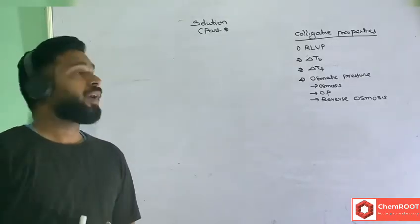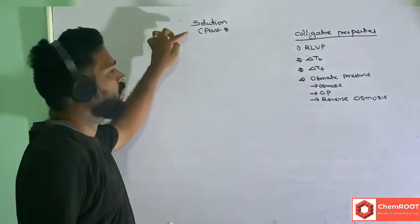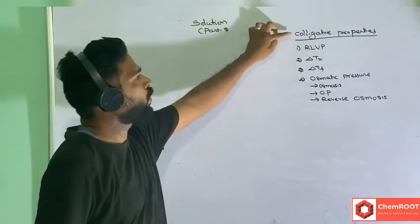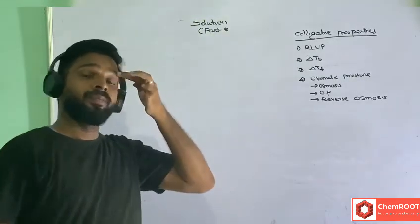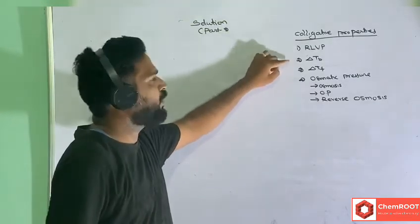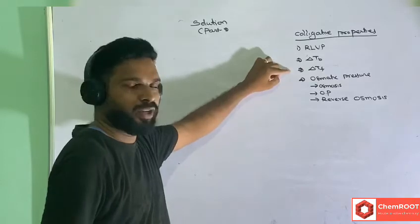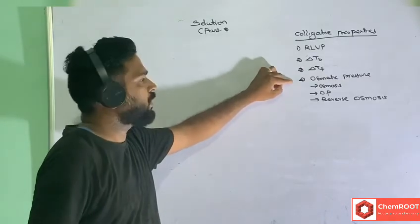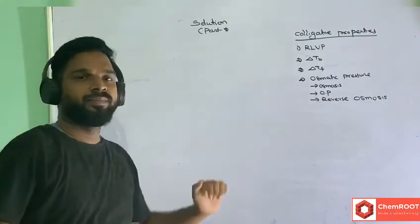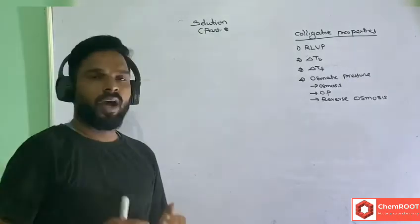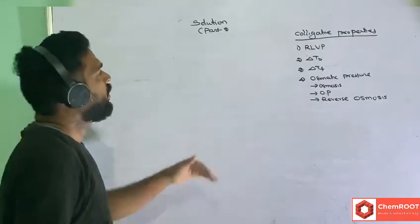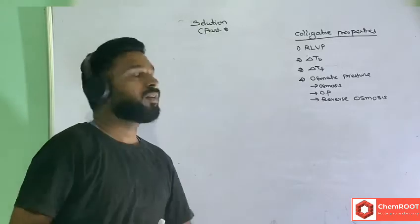Hi students, we are going to discuss about Solution Part 3. In this part, we are mainly discussing colligative properties. In colligative properties, we cover relative lowering of vapor pressure, elevation in boiling point, depression in freezing point, and finally osmotic pressure — including osmosis, reverse osmosis, isotonic solutions, and hypertonic solutions.